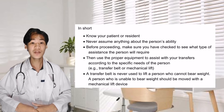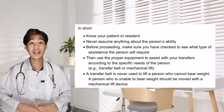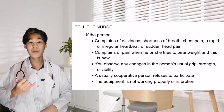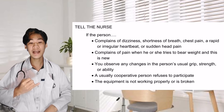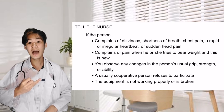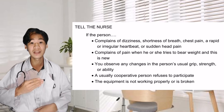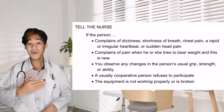A transfer belt is never used to lift a person who cannot bear weight. A person who is unable to bear weight should be moved with a mechanical lift device. Make sure you have been trained in the use of these devices before you use them. During the transfer, tell the nurse if the patient complains of dizziness, shortness of breath, chest pain, a rapid or irregular heartbeat, or sudden head pain — or if they experience pain when trying to bear weight. Also notify the nurse when you observe any changes in the person's usual grip, strength, or ability; if a usually cooperative person refuses to participate; or if the equipment is not working properly or is broken.